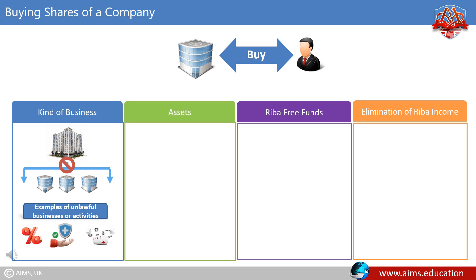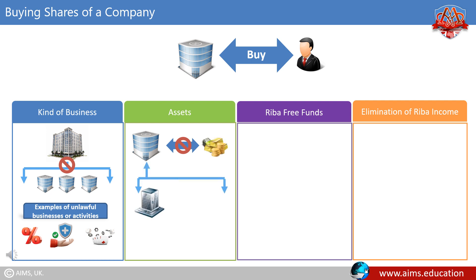Second condition: assets. The company must not comprise of only liquid assets, but should also have fixed assets, such as buildings, plants, or machinery. Otherwise, shares should not be purchased.